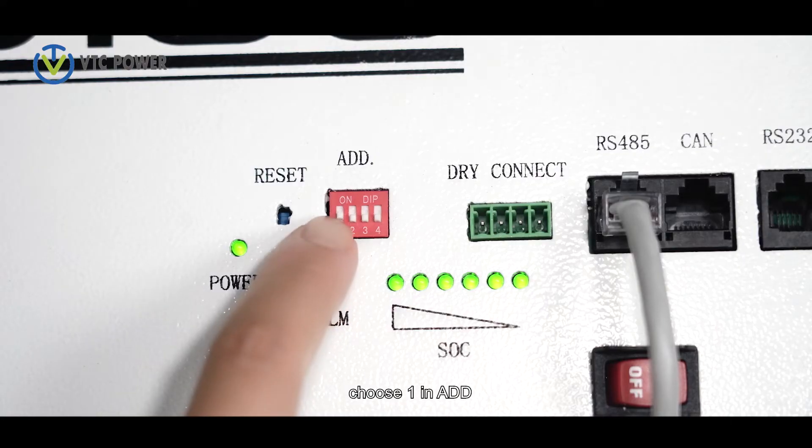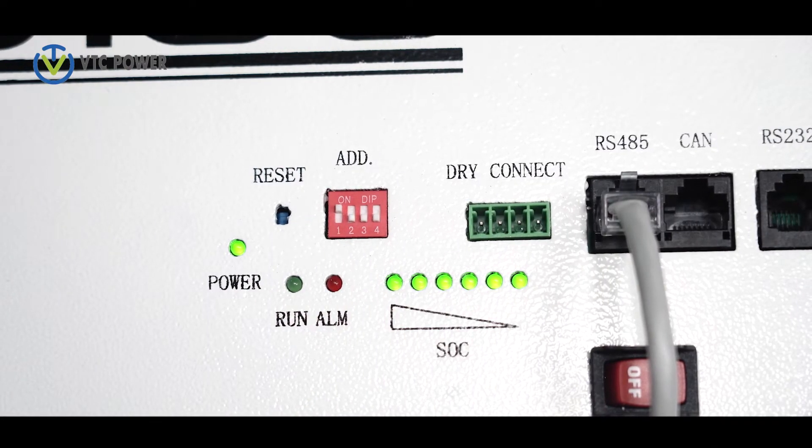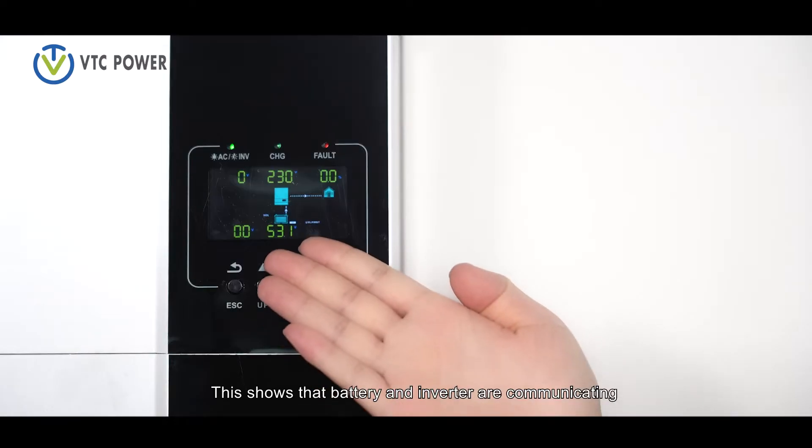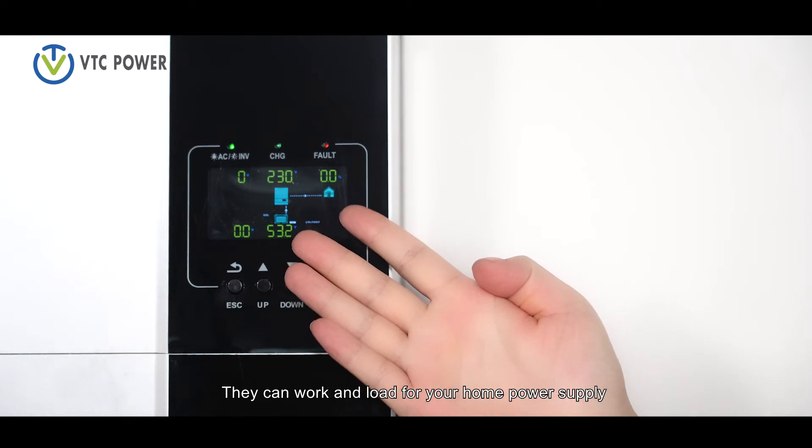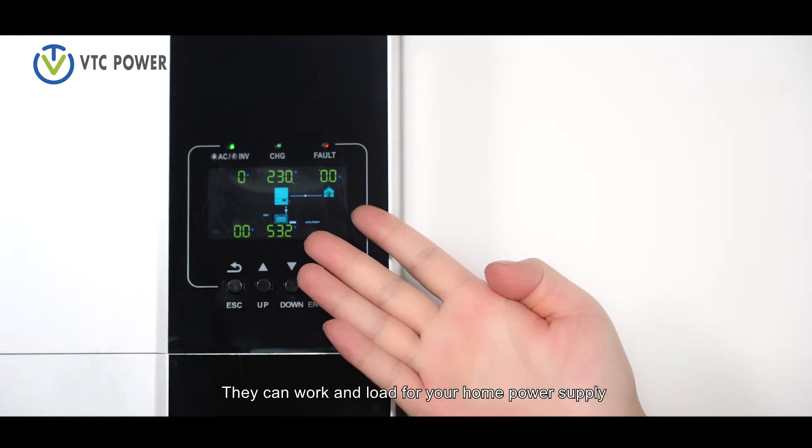Choose one in ADD. This shows that battery and inverter are communicating. They can work and load for your home power supply.